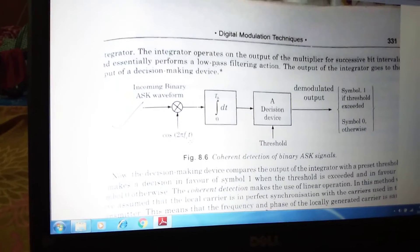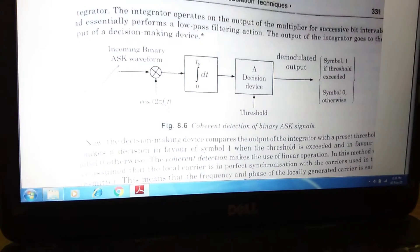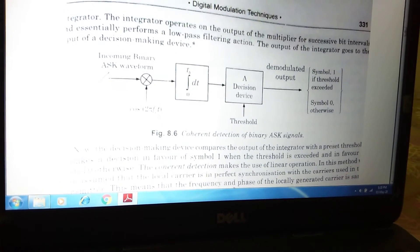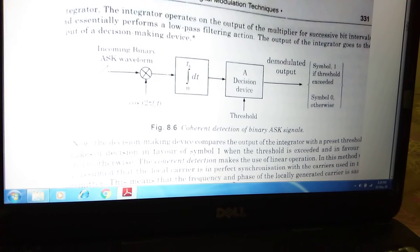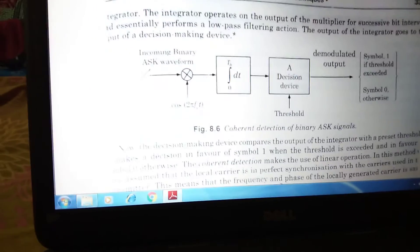After that, we are using one integrator. The limit of the integrator, depending on the bit duration, is 0 to Tb. After this integrator, we are using one decision device. In case of digital logic circuit or digital demodulator circuit, sometimes we are using this decision device.